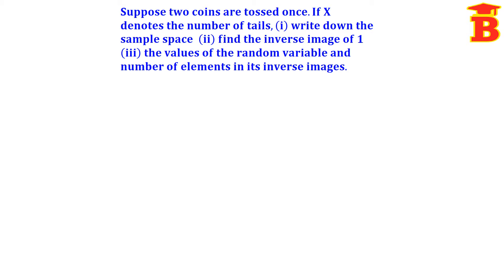See the problem. Suppose two coins are tossed once. If X denotes the number of tails: first, write down the sample space; second, find the inverse image of 1; third, find the values of the random variable and the number of elements in its inverse images.